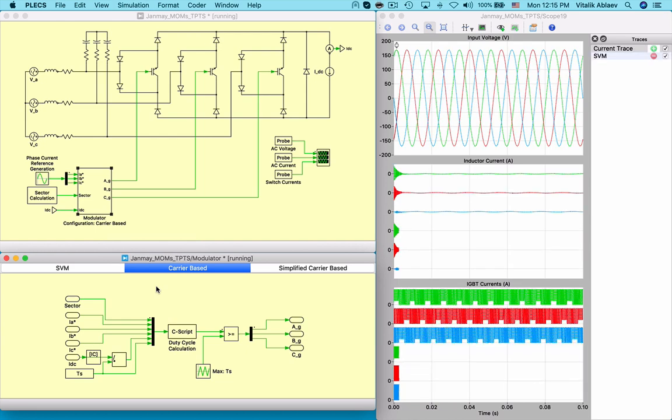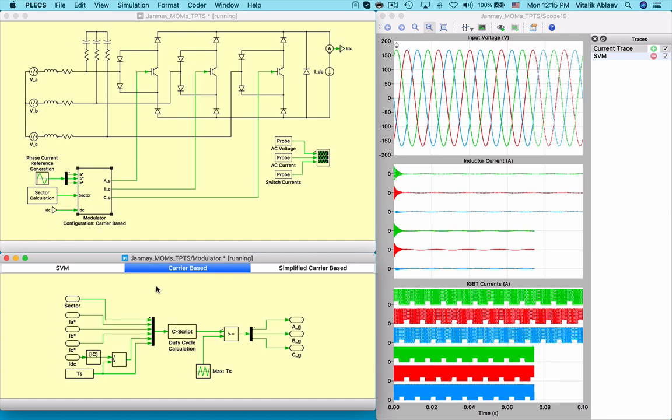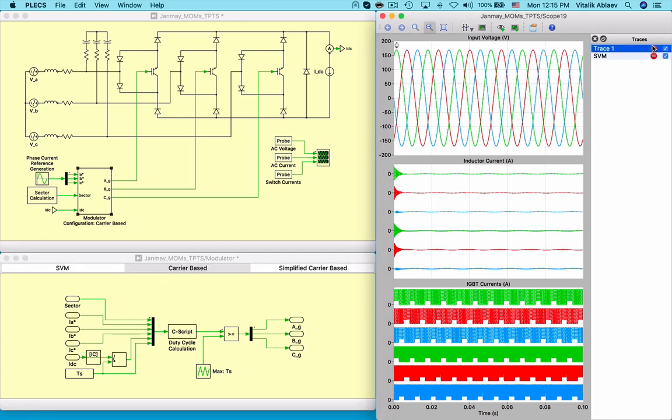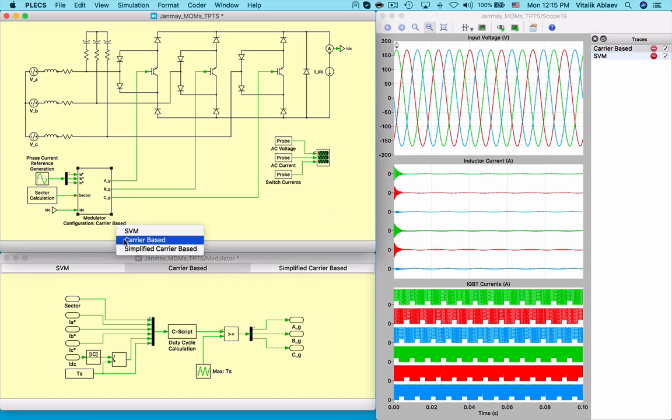For the carrier-based modulation, we derive the three modulating waves from three sinusoidal phase inputs for each of the 12 subsectors, which are then compared to a triangular waveform.